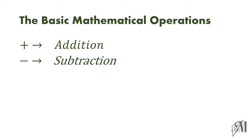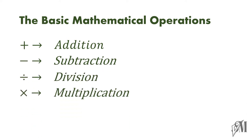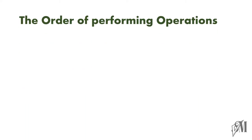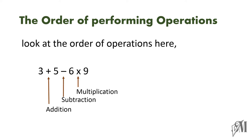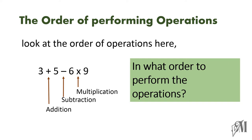Addition, subtraction, division and multiplication are considered as the basic mathematical operations. Through this video we are going to see in what order to perform the mathematical operations when there are more than two operations in a sum. Here 3 plus 5 minus 6 into 9 is given. The operations are addition, subtraction and multiplication. Though the order of operations lie like this, we must think of how to perform the operations. Let us see the rules and regulations we have to follow while performing mathematical operations.